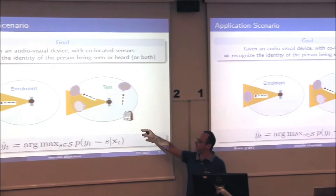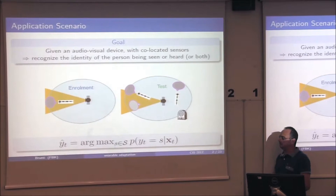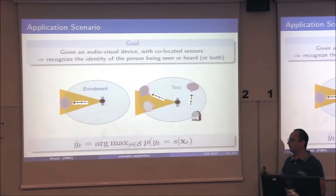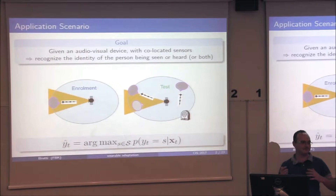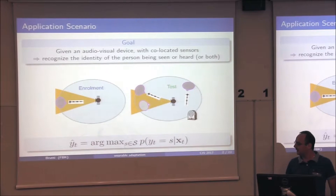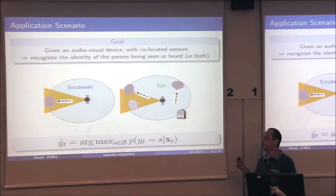The person could be silent, could be out of the field of view, or there could be interference sources. Basically we have a set of speakers and want to find the identity that maximizes the probability of the observation given the speaker. This is the traditional person identification task — I have an audio background so I tend to use 'speaker' instead of 'person.'